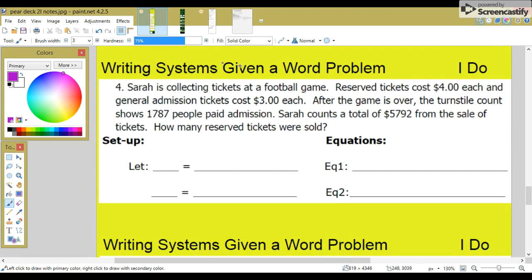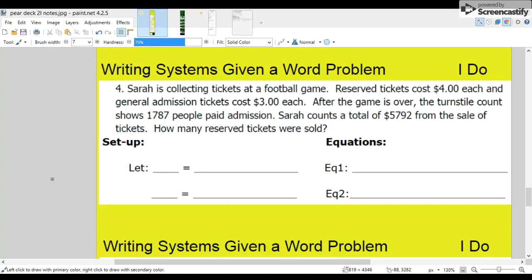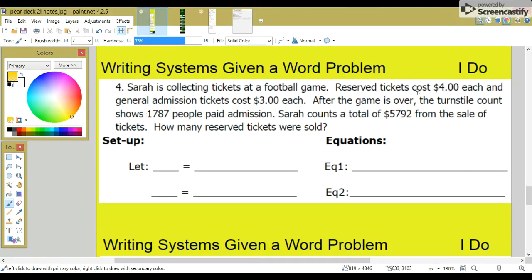Writing systems given a word problem. Sarah is collecting tickets at a football game. Reserve tickets cost four dollars each. And general admission tickets cost three dollars each. After the game is over, the turnstile count shows 1,787 people paid admission. Sarah counts a total of $5,792 from the sale of tickets. How many reserve tickets were sold? So first we will highlight some key words. Reserve tickets were four dollars each. And the general admission tickets were three dollars each.